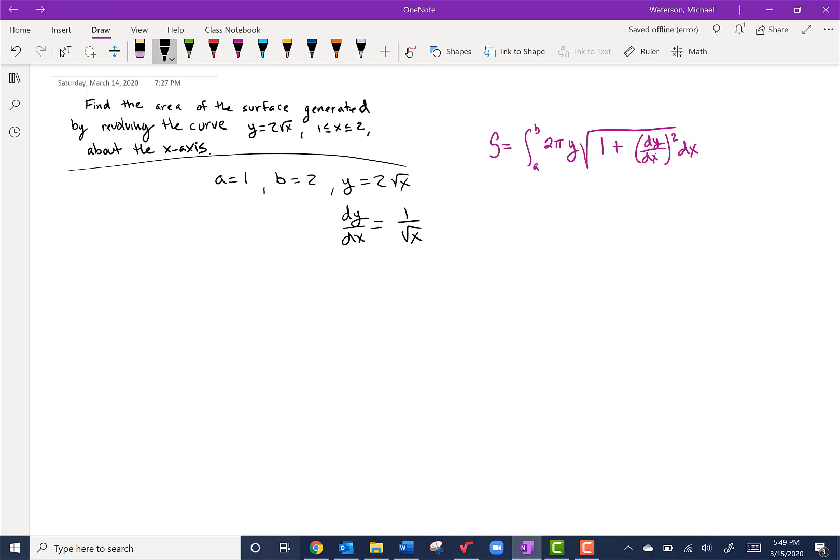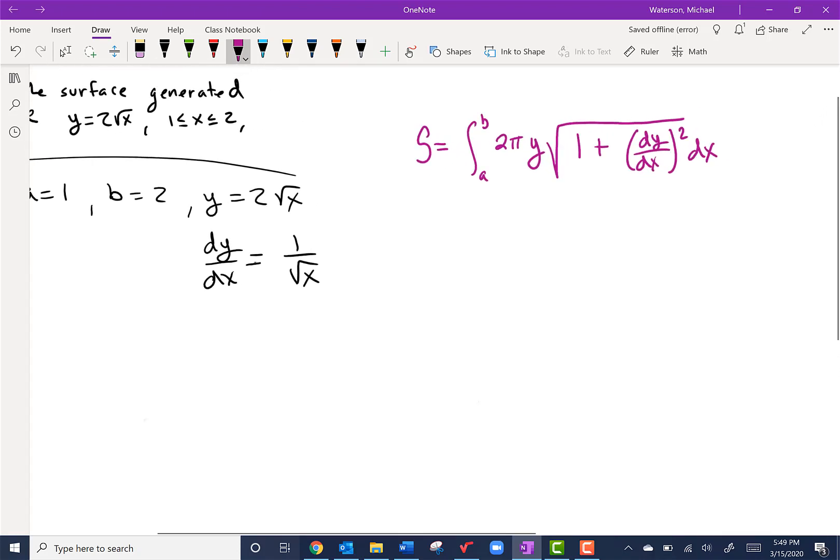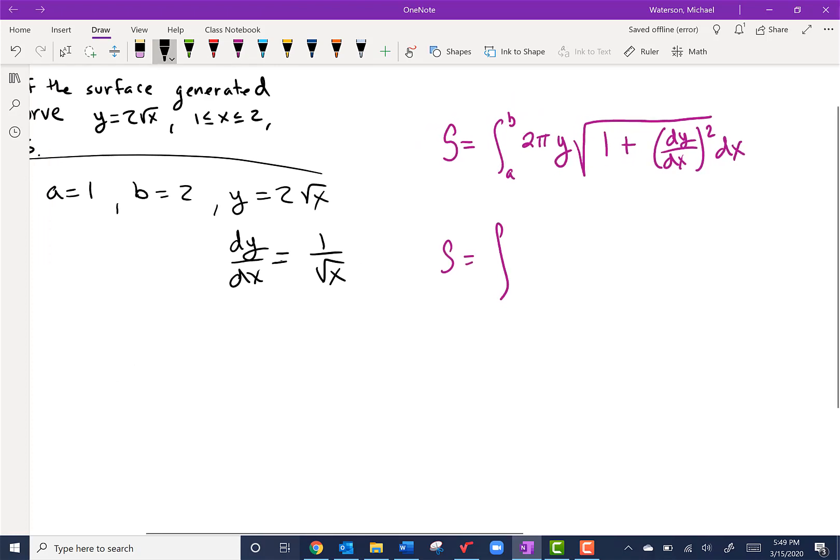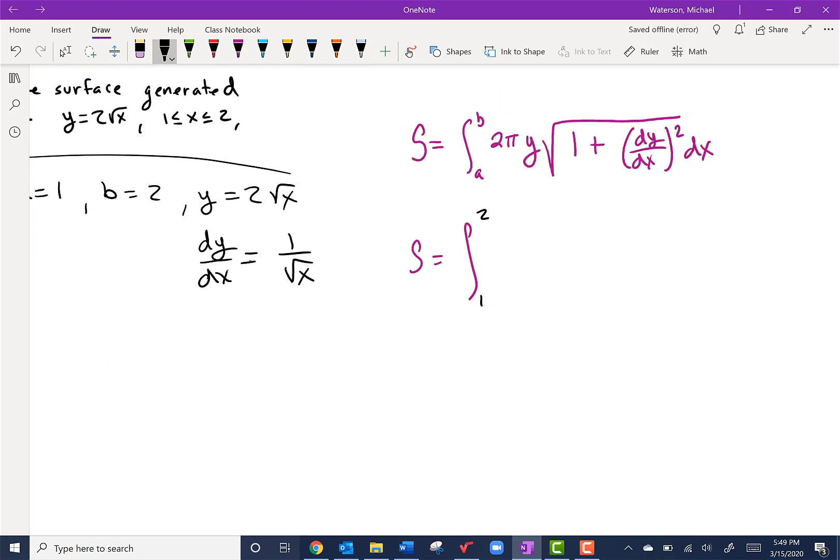Well shoot, we've defined everything, we know where it goes. Now it's just time for us to use our integration skills. This is equal to the integral from a to b, so 1 to 2, of 2π times our y. And our y, of course—we're going to use what it's equal to: 2√x.